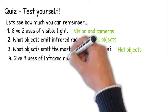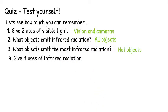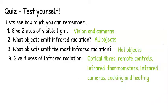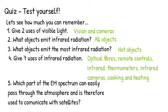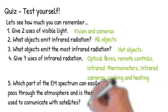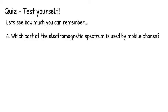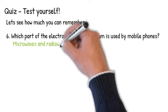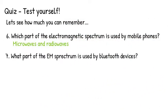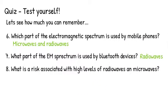Can you give seven uses of infrared radiation? Which part of the electromagnetic spectrum can easily pass through the atmosphere, and is therefore used to communicate with satellites? Which part of the electromagnetic spectrum is used by mobile phones? What is a risk associated with high levels of radio waves and microwaves?